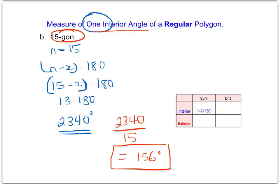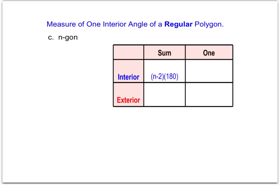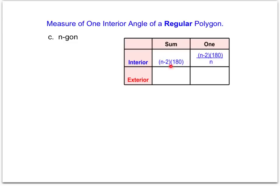We can see a pattern here: for any regular polygon, to find just one of the interior angles, we divide by the number of sides. For our third question, it asks us to find the measure of one interior angle of an n-gon — that's the formula for any regular polygon, no matter how many sides. It's going to be the sum of the interior angles divided by the number of sides. It's important to keep these straight, so look at the problem to see if they're asking for the sum or just one interior angle.